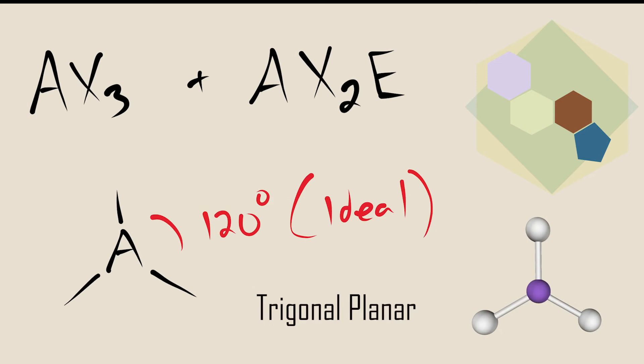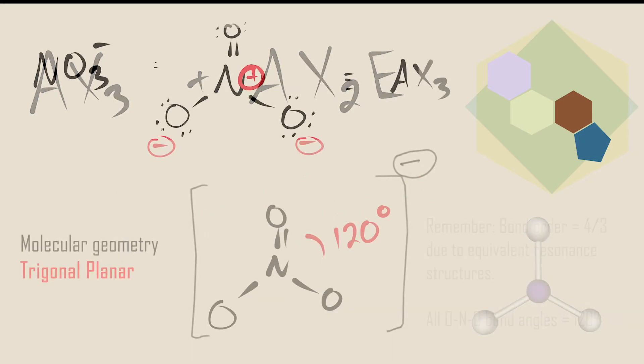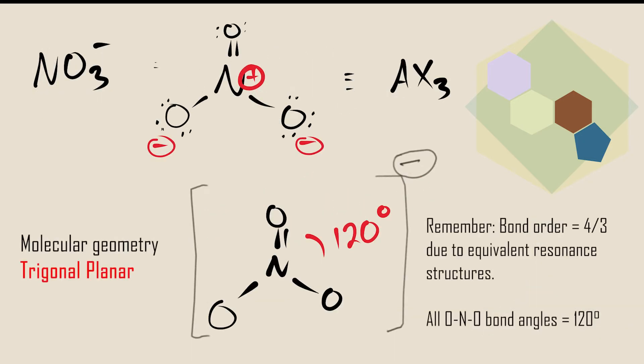Molecules which have three electron groups around the central atom repel each other through the corners of an equilateral triangle, which gives the trigonal planar arrangement. Shown here is an example using the nitrate ion. From the Lewis structure, we can see that the central atom is bonded to three electron groups. Since those electron groups are atoms, we can give the nitrate ion the AX3 designation. Trigonal planar geometry is adopted in order to minimize electron repulsion.